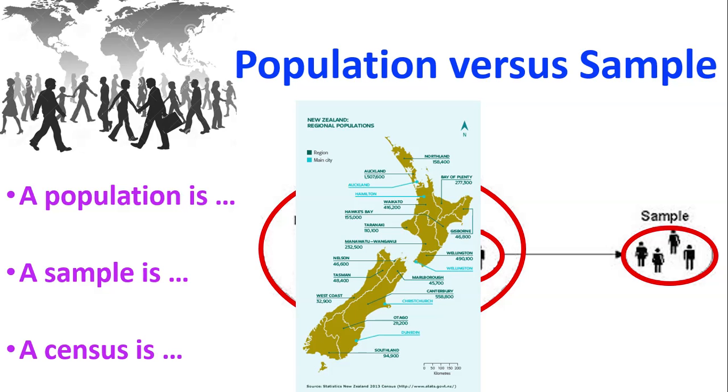So in New Zealand, that would be collecting data from every single person that lives in New Zealand at a particular moment in time. And that happens every four years. It costs two or three hundred million dollars every time it does it. And it takes a long time, takes about 12 months to collect all the data and process it.